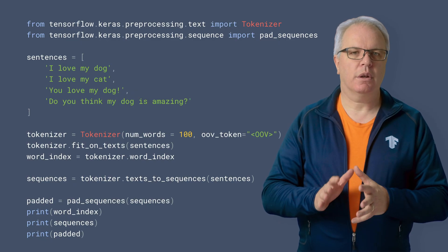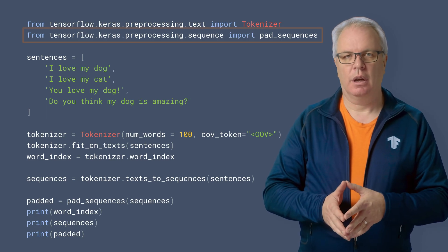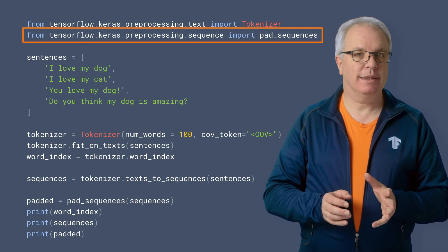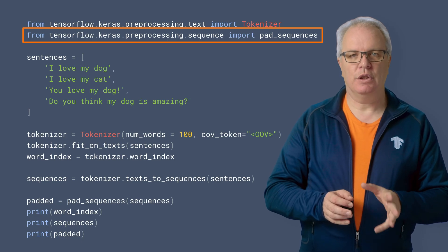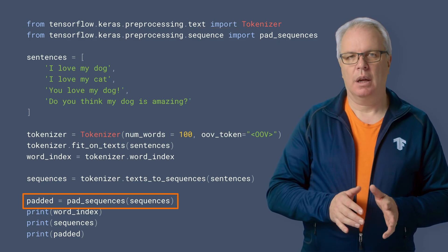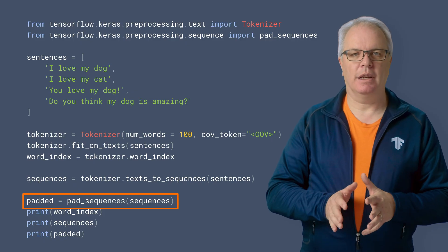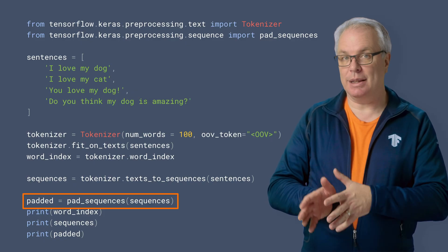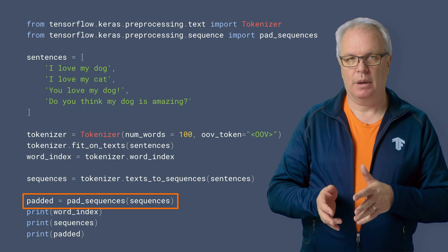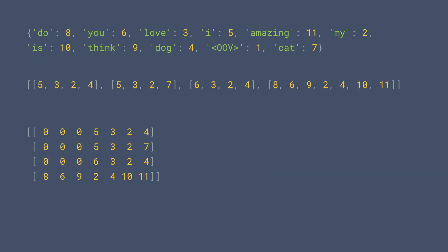So here's the code that we've been using, but I've added a couple of things. First is to import pad_sequences from preprocessing. As its name suggests, you can use it to pad our sequences. Now, if I want to pad my sequences, all I have to do is pass them to pad_sequences and the rest is done for me. You can see the results of our sentences here. First is the word index, and then is the initial set of sequences. The padded sequence is next. So, for example, our first sentence is 5, 3, 2, 4, and in the padded sequence, we can see that there are three zeros preceding it.